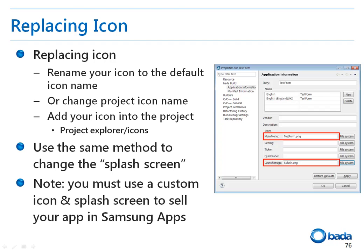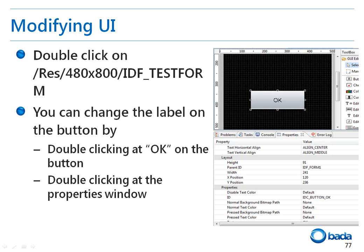Let me show you how to modify the UI. First, open the idf_testform.xml file. Press the OK button and open the properties window at the bottom of the window. You can specify various properties here — for example, you can change the button text, the button size, the button location, and the text alignment.